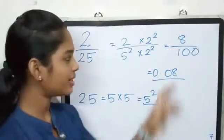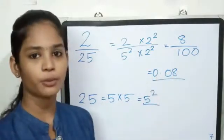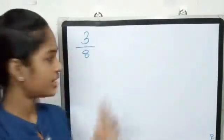If we get 100, we get 2 squared, then we get 2 squared. We get 0.08.